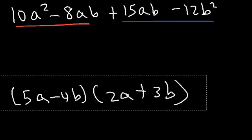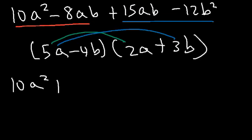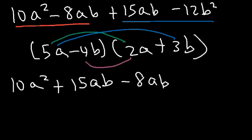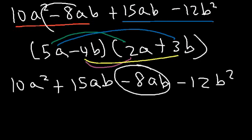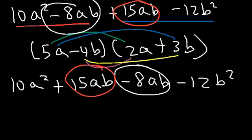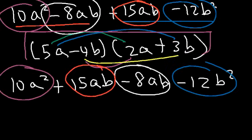To prove this is the answer, let's FOIL the expression and verify. 5a times 2a is 10a squared. 5a times 3b is 15ab. Negative 4b times 2a is negative 8ab. Negative 4b times 3b is negative 12b squared. We get 10a squared plus 15ab minus 8ab minus 12b squared, which matches the original expression, confirming the answer is correct.